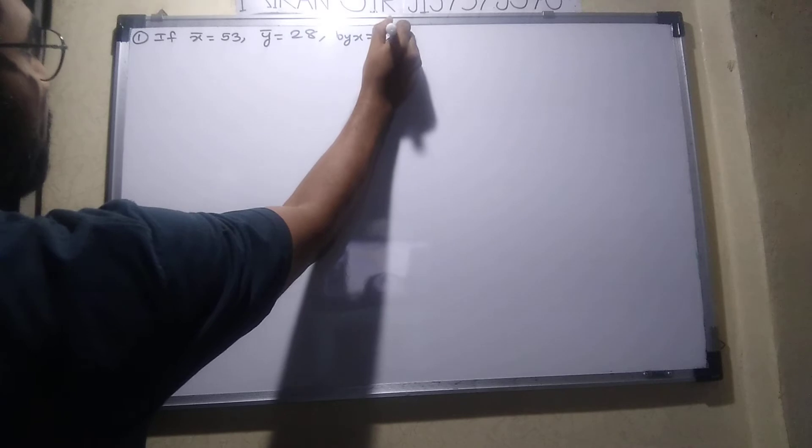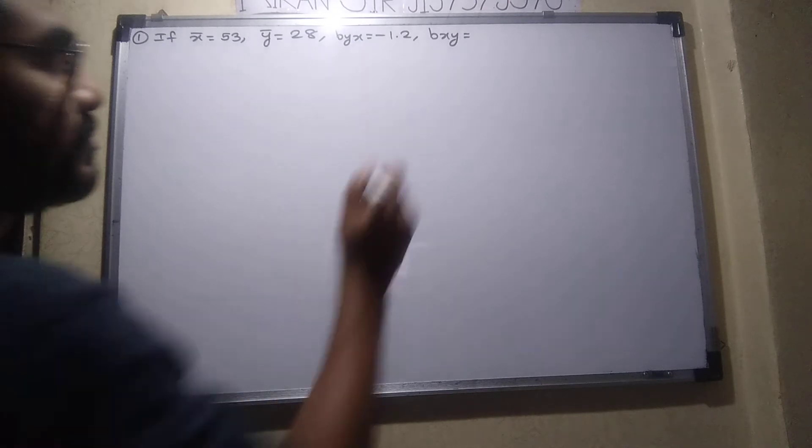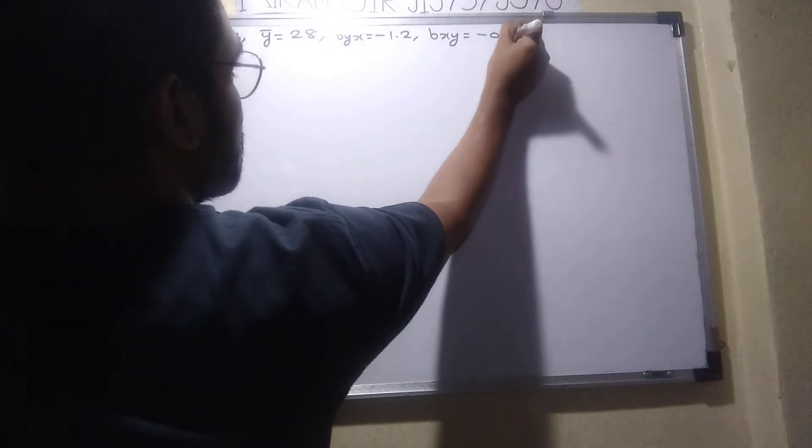Tell me the first sum. x̄ is equal to 53, ȳ is equal to 28, byx is equal to minus 1.2, and bxy is equal to minus 0.3.